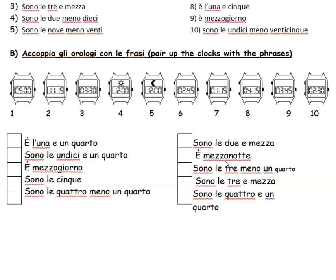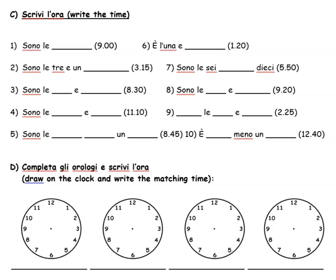So here: sono le 3 meno un quarto. After that, 1:15 — sono le una e un quarto. Then 4:15 — sono le 4 e un quarto, there. Number nine: 3:45 — so you're looking for the phrase which is 4 minus a quarter, so sono le 4 meno un quarto is that one there. And finally 2:30 — sono le 2 e mezza, which is there.